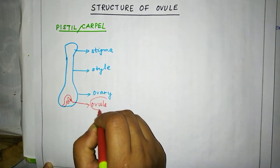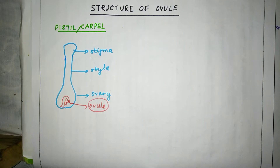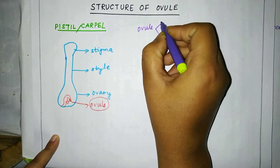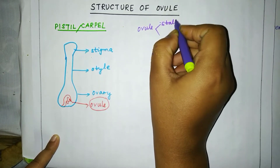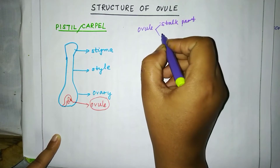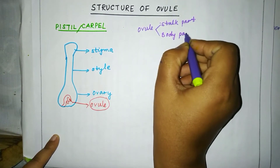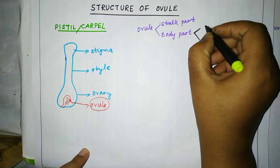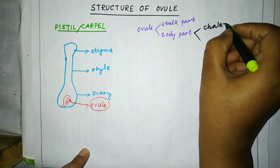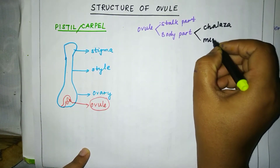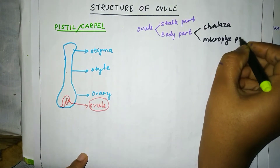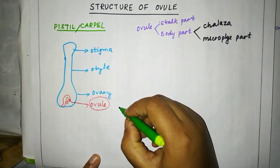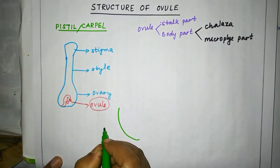We will discuss the detailed structure of ovule. Ovule has two parts: the stock part and the body part. The body part again has two parts: the chalazal part and the micropyle part. Let's see the structure of ovule — this is the structure of ovary.